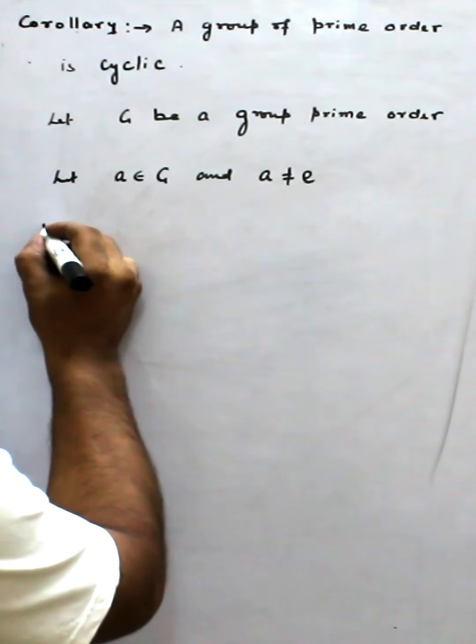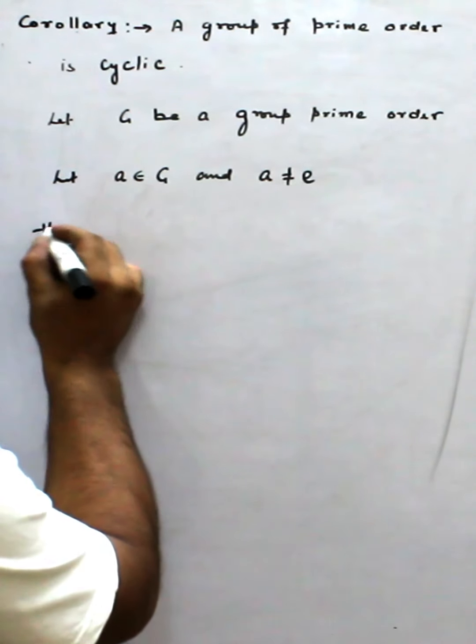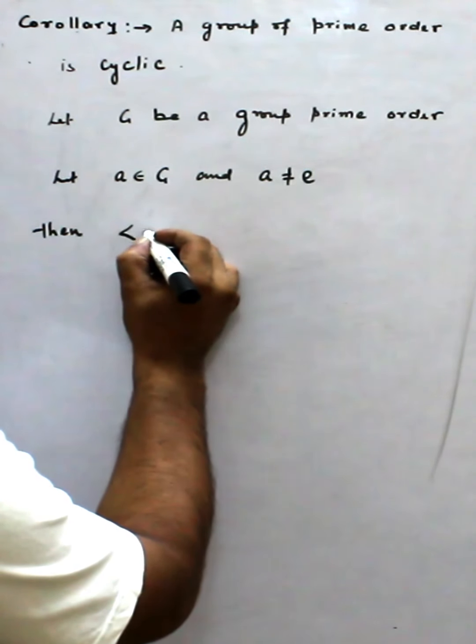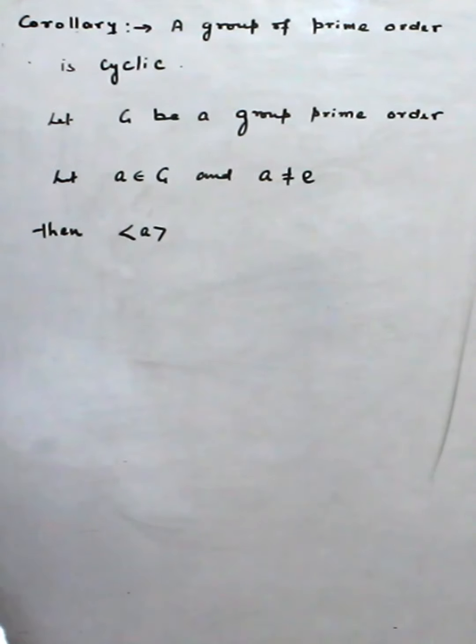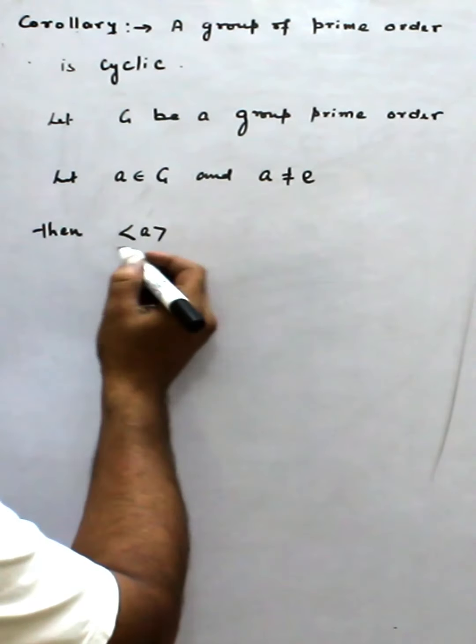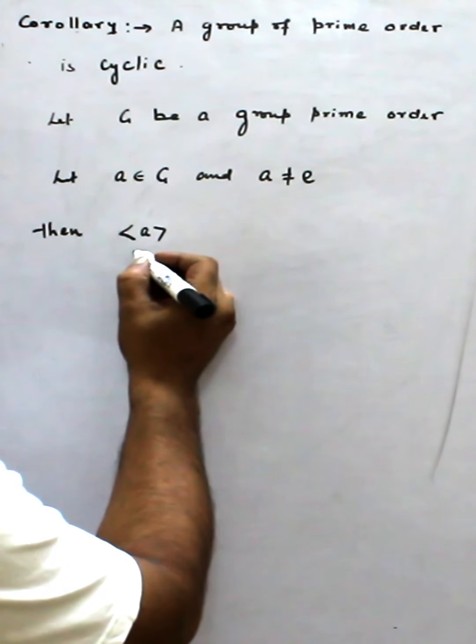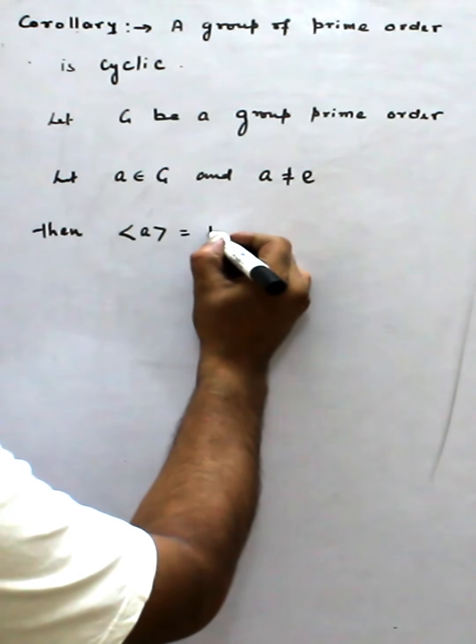Then we construct the subgroup A. We say this is equal to H.